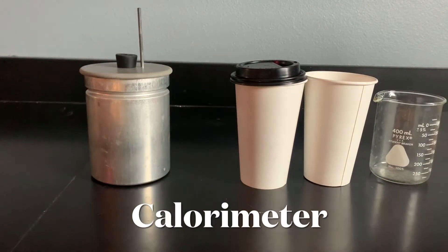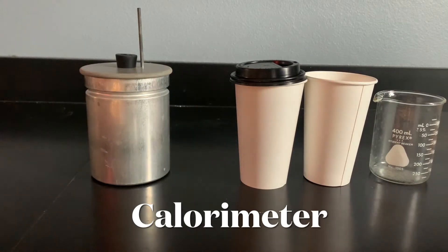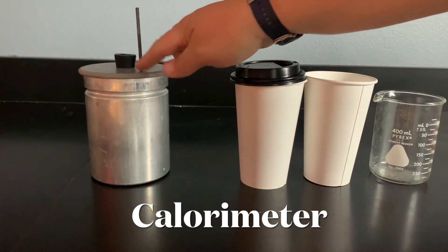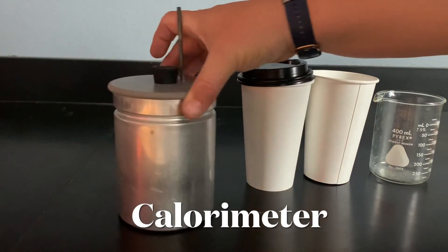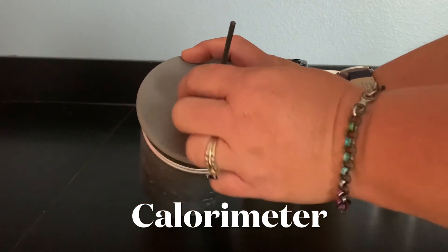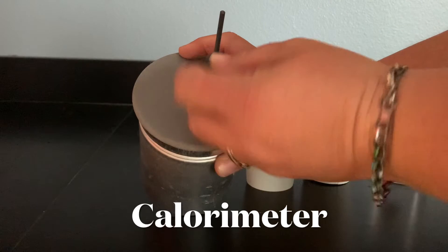So we're going to use what's called a calorimeter, and the calorimeters come in different methods depending on what you have available to you. The first one up is this one right here. This is a nice calorimeter. It has a spot right here for a thermometer.